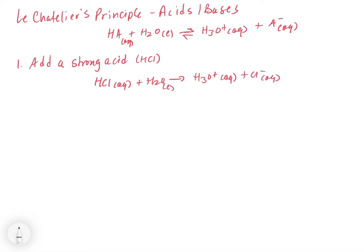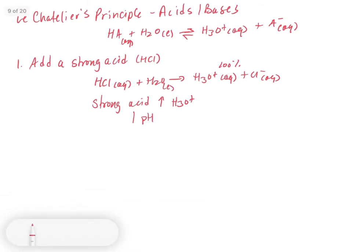We're going to get 100% conversion because it's strong. What the strong acid does is increase the concentration of H3O plus, and so we're going to get a decrease in pH immediately — we're going to become more acidic. Whenever you add something to a solution, if you're adding an acid, you're going to lower the pH; if you're adding a base, you're going to raise the pH. So we're going to increase the H3O plus concentration and consequently decrease the pH.